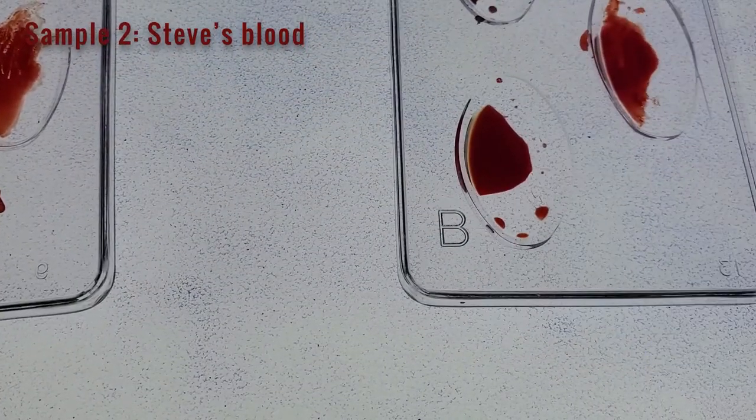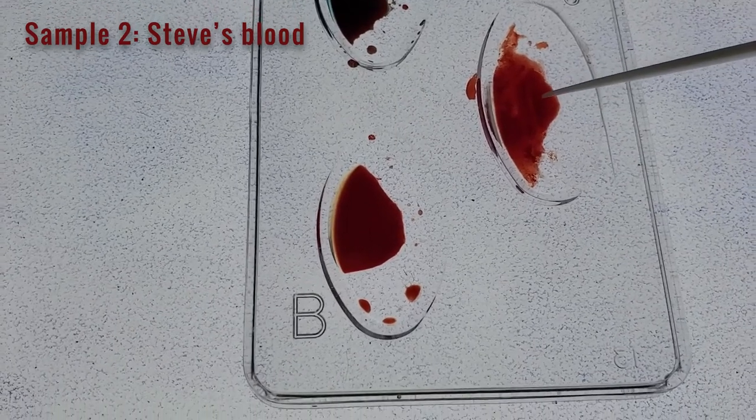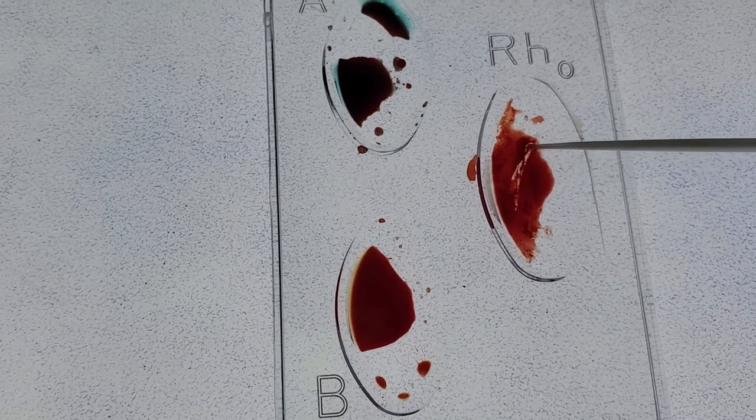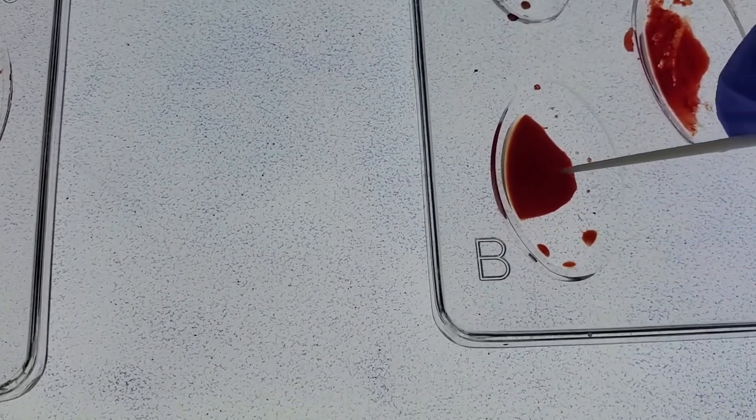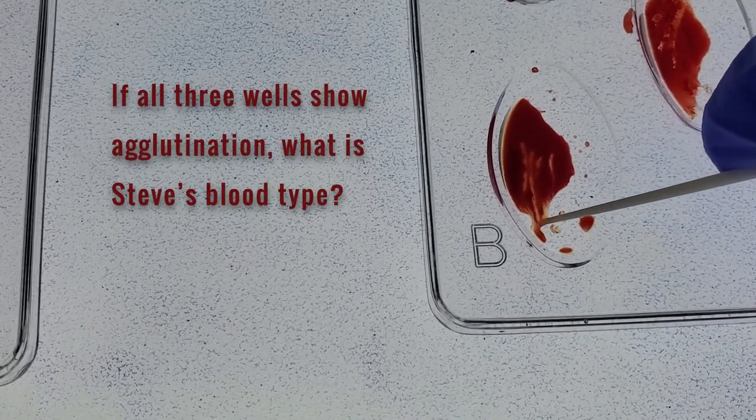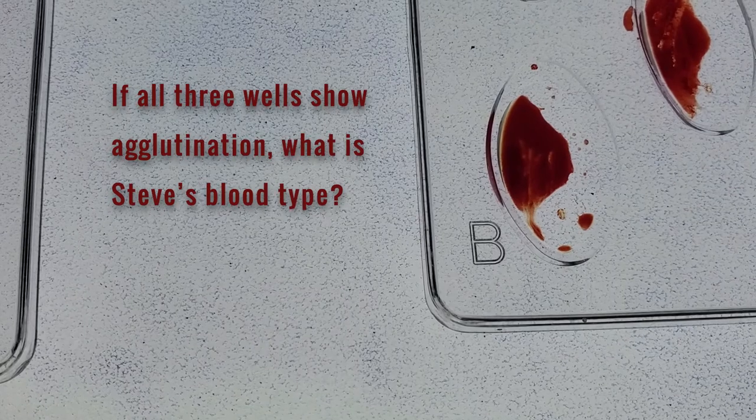In the next blood sample, the Rh shows a strong agglutination reaction again. Looking at A, it's also showing agglutination — maybe even more strongly than the first sample, with blood clearly separated from the fluid in the upper margin. For the B well, on first glance it doesn't look like agglutination, but when picked at with a toothpick and drawn out, the blood does clump back together in a way it didn't in the first sample.